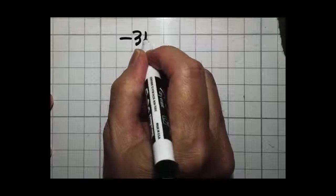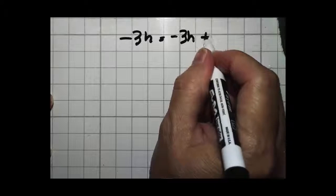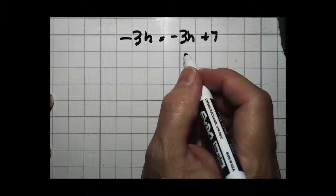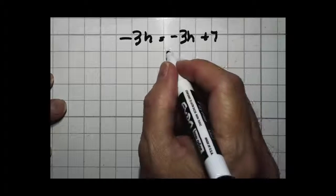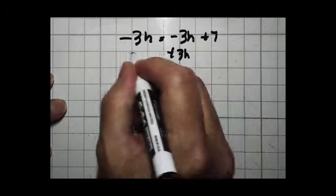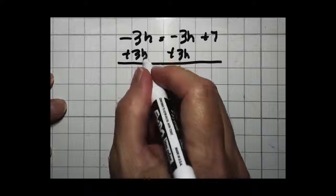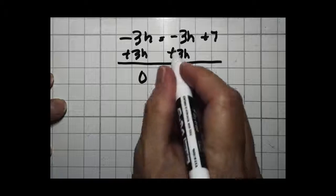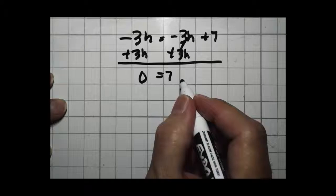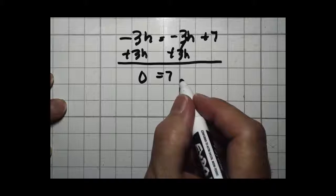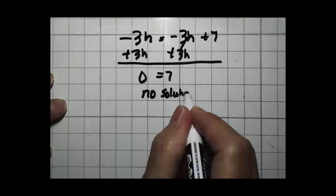You're going to get a problem that looks like this: negative 3h equals negative 3h plus 7. You're going to pretend like you're solving it, like you want to get h by itself. So we're going to add 3h to both sides. Minus 3h plus 3h, so 3h minus 3h is 0. This goes away also, and you end up with 0 equals 7. Is there any way you can get 0 to equal 7? No. So if you run into something like that, you know there's no solution.